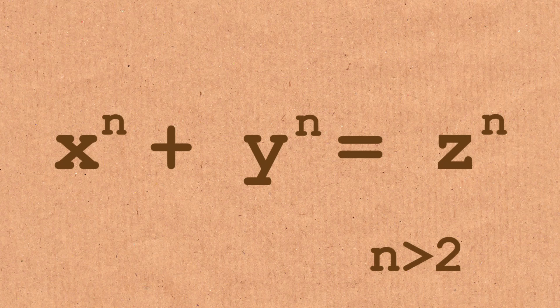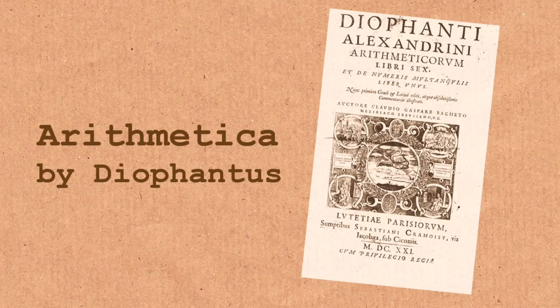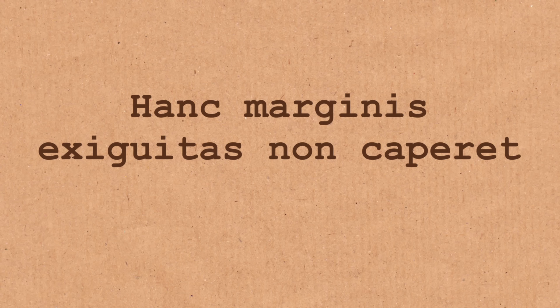And Fermat discovered this proof. And he wrote, in the margin of a book he was reading that evening, called The Arithmetica by Diophantus, and he wrote in the margin of his book, I have a truly marvellous proof, which this margin is too narrow to contain, hank marginus exiguatus non caperat, in Latin. In other words, I know how to prove that this equation has no solutions, but I don't have the space to write it down. And then he drops dead.